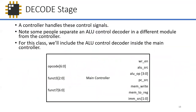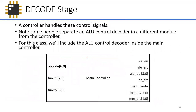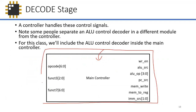The controller handles all these control signals. Some people separate the ALU control decoder into a different module, but for our purposes, we'll integrate it into the main controller — it's much more elegant. When you make your controller module, the inputs are the four signals (opcode, func3, func7, zero) and the outputs are all the control signals. I'm already giving you hints on how to build it in your machine exercise.